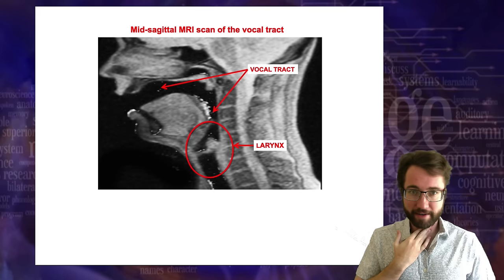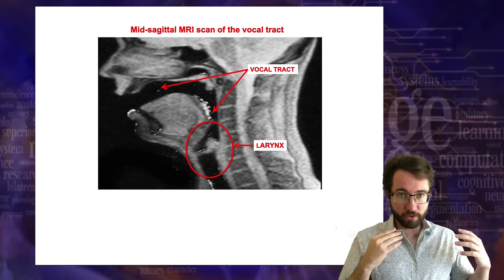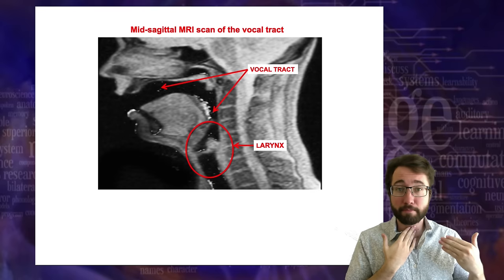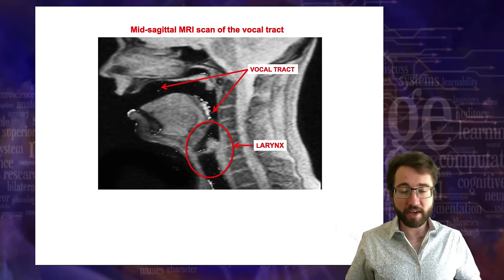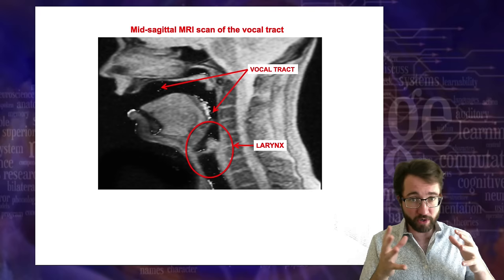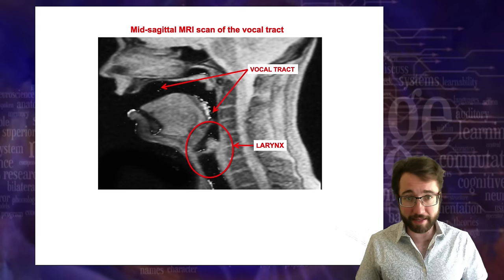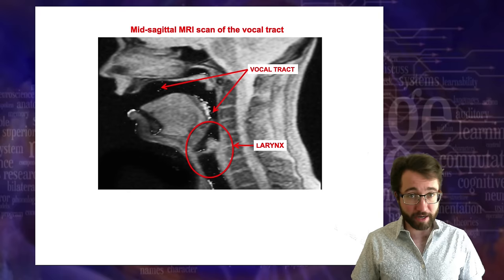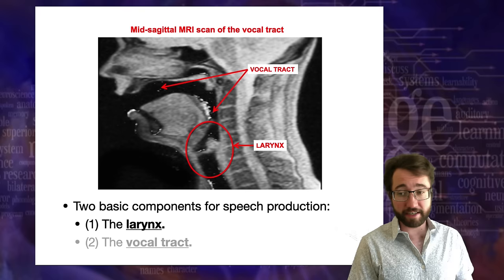Basically, speech production works like this: your larynx has folds in it that constrict. Air comes through those folds from your lungs and creates a vibration — a buzzing sound. Speech production consists of using your larynx to create a buzzing sound. Then the stuff above the larynx — your vocal tract — moves around and constricts the airflow in various ways to modify that buzzing sound. That creates all the sounds of natural language. The two basic components for speech production are the larynx and the vocal tract; they operate in tandem.